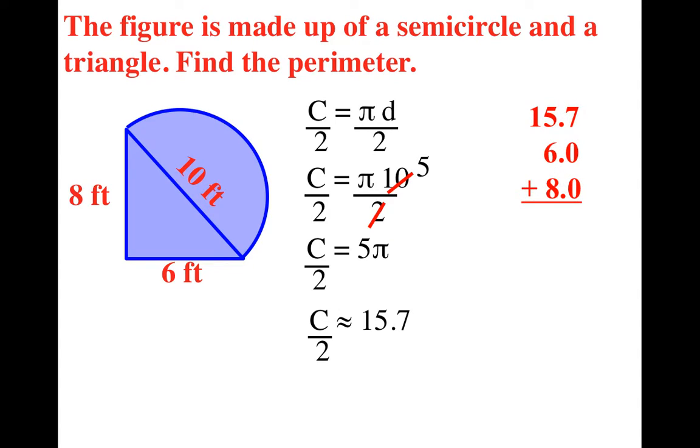Now we need to find out the distance around the entire shape. So I need all three sides. I need the 15.7, which was the half circle. I need the 6, and I need the 8. Do you see that? Add them all up, and you've got your answer. It's about 29.7 feet for the distance around that shape.